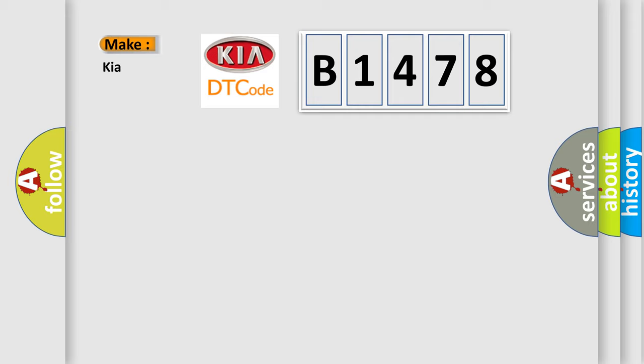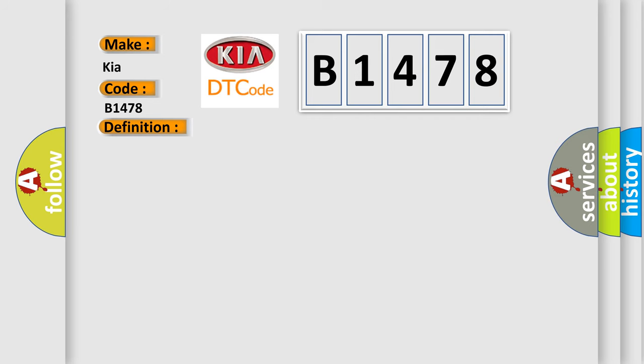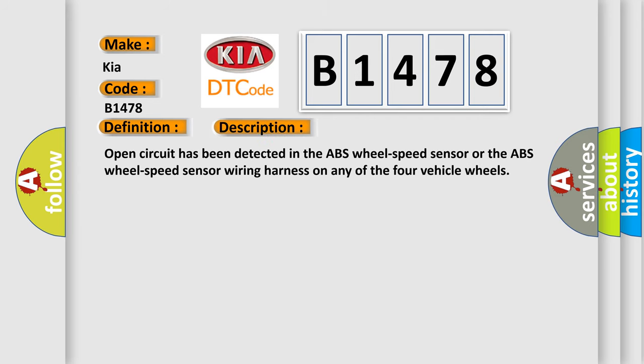So, what does the diagnostic trouble code B1478 interpret specifically for car manufacturers? The basic definition is: RR ABS wheel speed sensor open circuit system. Open circuit has been detected in the ABS wheel speed sensor or the ABS wheel speed sensor wiring harness on any of the four vehicle wheels.